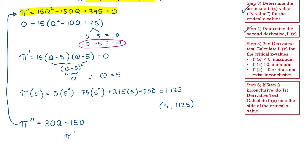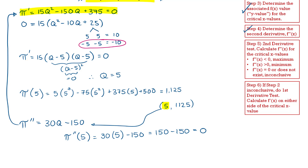I'm going to evaluate the second derivative at the critical point q equals 5. So the second derivative at q equals 5 is 30 times 5 minus 150, which gives me 150 minus 150, equal to 0. When the second derivative equals 0, I don't know if it's a minimum, maximum, or saddle point. So the second derivative test is inconclusive — but that's okay because we have a step 6.